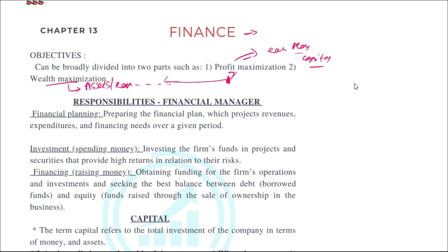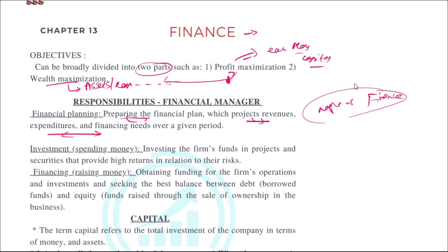If you are a manager dealing with finance, the roles and responsibilities of a financial manager include: preparing a financial plan, projecting revenues, expenditure, and financial needs over a given period. You also handle how money will be invested and make a plan for how to raise the money needed.